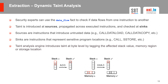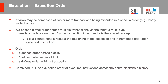Another example is the SHA3 instruction, which takes a sequence of bytes from memory, computes the SHA3 hash, and places it onto the stack. The result will be tainted if at least one byte taken from memory is tainted. Another important aspect is the execution order of transactions. Attacks may be composed of two or more transactions executed in a specific order — a prime example being the two Parity wallet attacks, where the attacker had to first set itself as owner before exploiting the contract. We encode a total order across multiple transactions via a triplet where b is the block number, t is the transaction index, and s is the execution step — a counter reset at the beginning of execution and incremented after each instruction. Combined, b, t, and s define the order of executed instructions across the entire blockchain history.